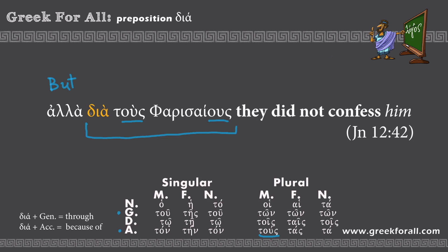That's it — very simple. Whenever we see our preposition we check the case of the following word. In this example it was accusative, so we translate this preposition as 'because of' — because of the Pharisees.